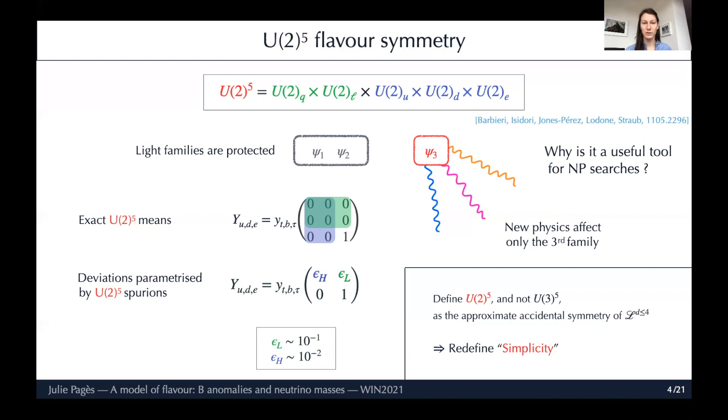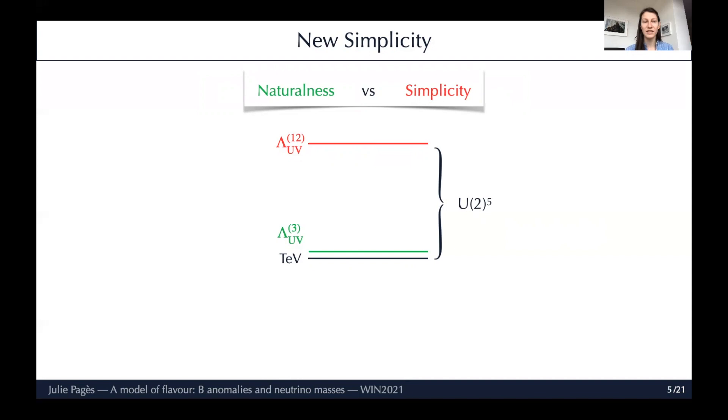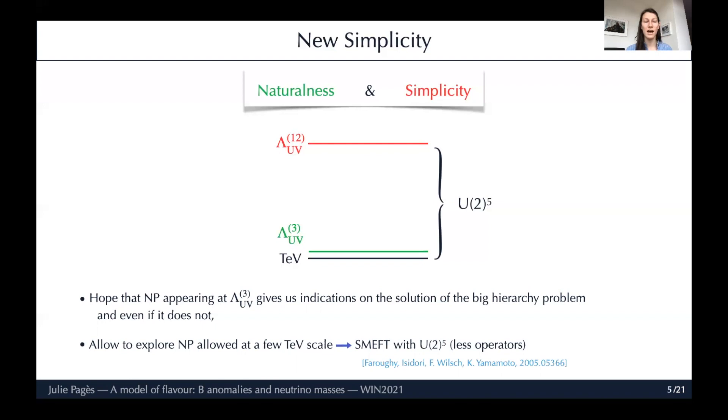At this point, I think it makes sense to define U(2)^5 and not U(3)^5 as the approximate accidental symmetry of our standard model. This way we redefine the concept of simplicity. By doing this, we split the two scales - we split the scale for first and second families and for the third family. This might even help for the hierarchy paradox, because separating the two scales, we can bring the third family scale much closer to the TeV scale. The simplicity is kept until the Lambda_1,2 scale. It's not guaranteed it's going to help, but we can hope that at Lambda_3 we will have some indication on how to solve the big hierarchy problem. Even if we don't, it still allows us to explore new physics at a few TeV scale, just around the corner.